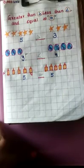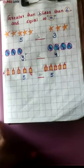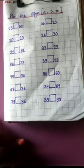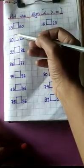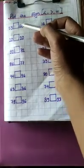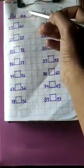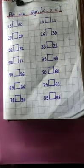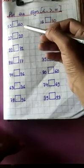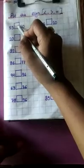Now take out your maths notebook and write the topic. Put the sign — greater than, less than, equal to. Now see: 55 and 60. Which one is greater? 60. So 55 is less than 60. Toh 55 ke side mein less than ka symbol hoga. Muh bandha hai.